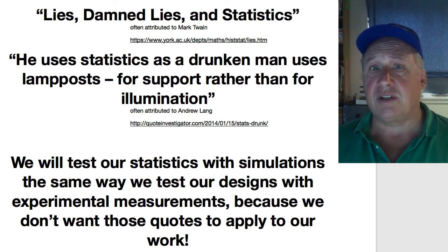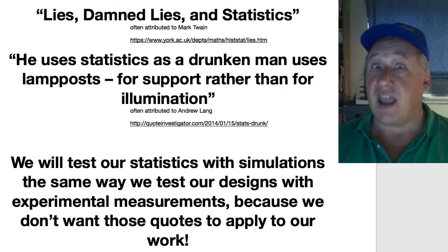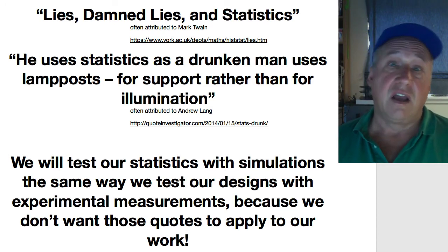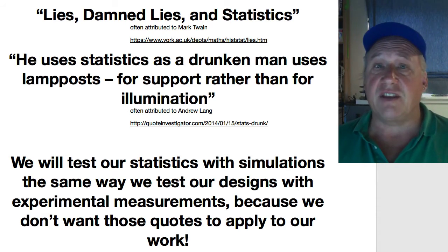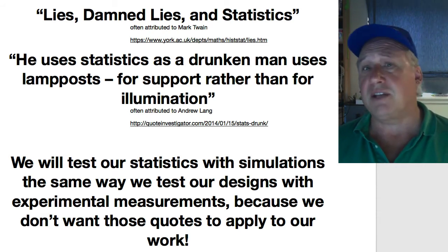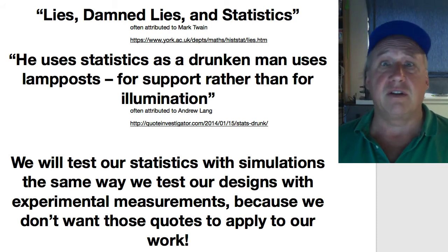In fact, attributed to Mark Twain is the quote that there are three types of liars: those who tell lies, damned lies, and then those who lie with statistics. There are others who have said things like he uses statistics as a drunken man uses a lamppost for support rather than illumination.